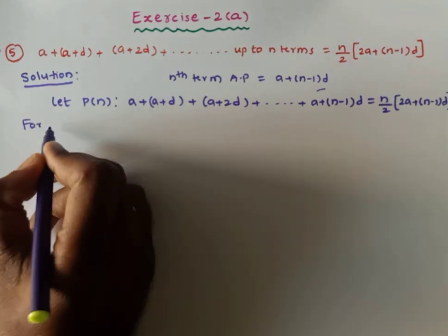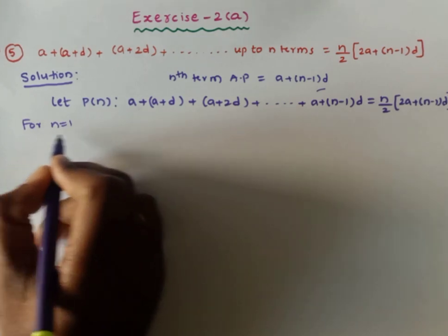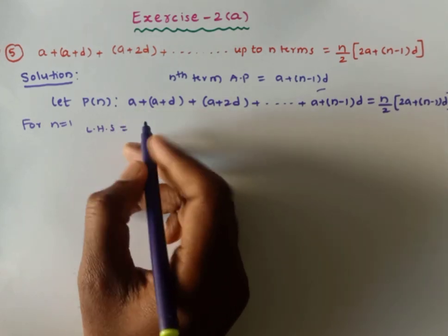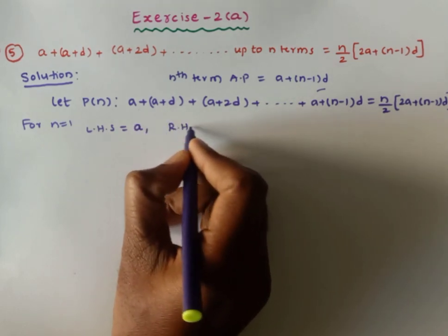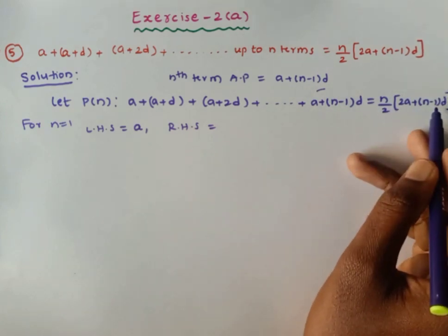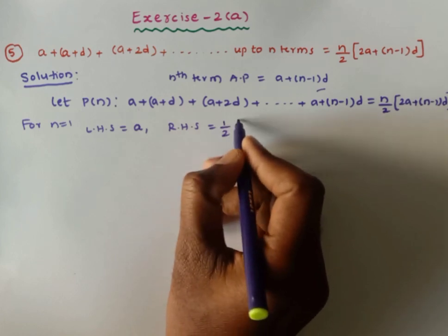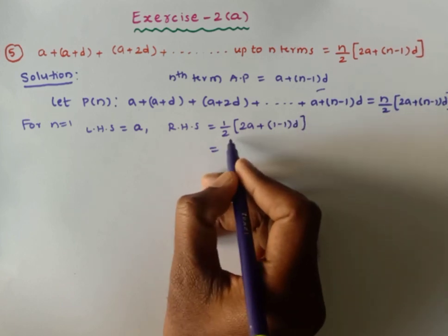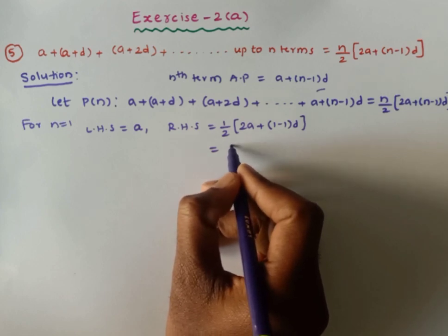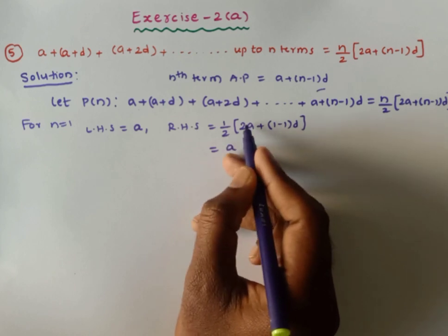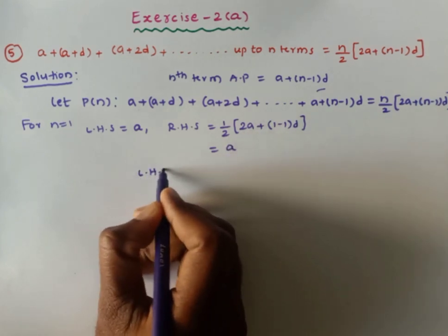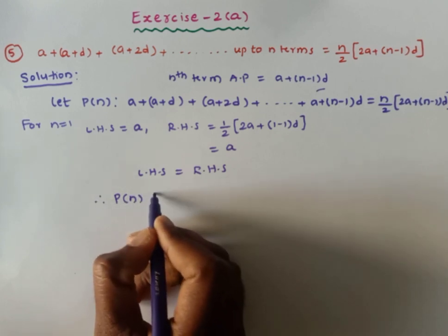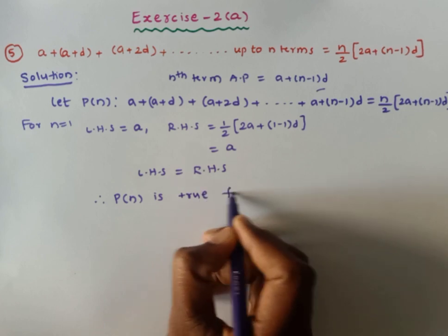The first step of mathematical induction is n=1. For n=1, the left-hand side of the given series is just the first term, which is a. The right-hand side is n/2 into (2a + (n−1)d), so putting n=1 gives 1/2 × (2a + 0×d) = 1/2 × 2a = a. So the left-hand side equals the right-hand side. Therefore, the given statement P(n) is true for n=1.